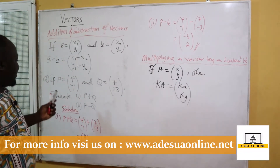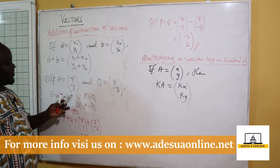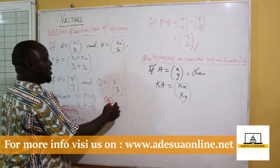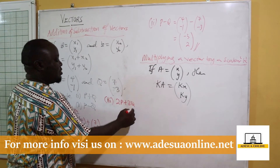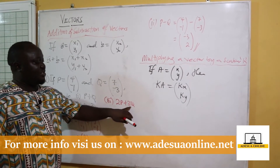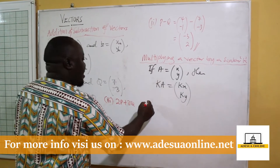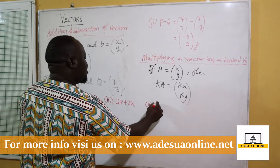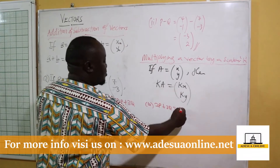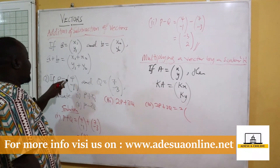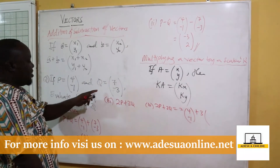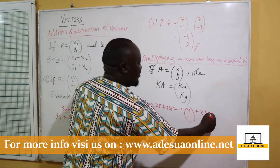Assuming p is equal to (4, -1) and q equals (7, -3), evaluate 2p plus 3q. Here, 2 is a scalar multiplying p and 3 is a scalar multiplying q. So 2p plus 3q equals 2 times (4, -1) plus 3 times (7, -3).